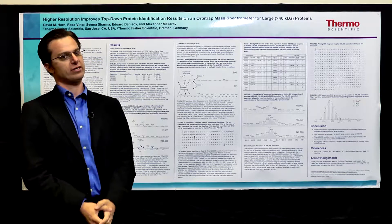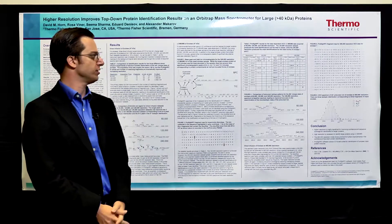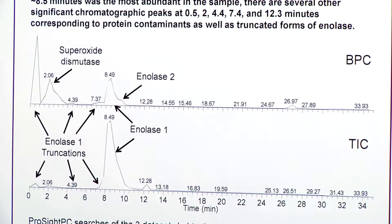And what we were surprised to find, or maybe not quite so surprised to find, was this was supposed to be a single protein enolase, 47 kilodaltons, and from our chromatograms here, from the base peak chromatogram and the total ion chromatogram, there was clearly several different species of proteins in the chromatogram.